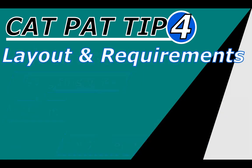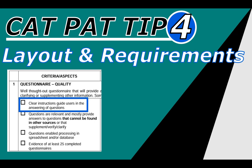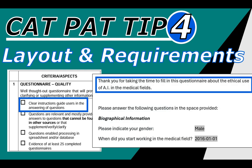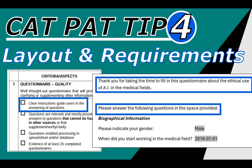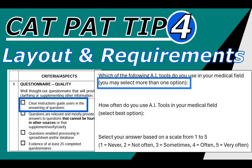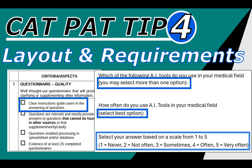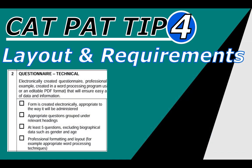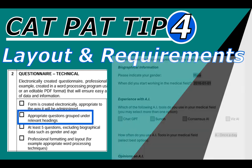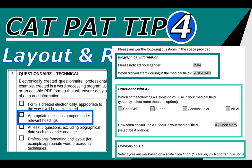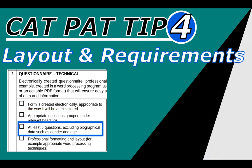CatPAT tip number four is layout and requirements. Make sure you get all the marks for the questionnaire. The rubric requires clear instructions that guide the user — for example, a nice introduction explaining what the questionnaire is about, and instructions such as 'please answer the questions in the space provided.' For other question types, indicate whether they can select more than one option or must select the best option. Also group your questions under relevant headings. Remember there must be at least five questions excluding biographical information.